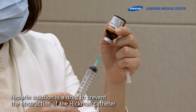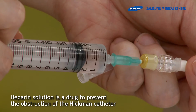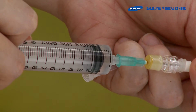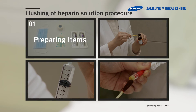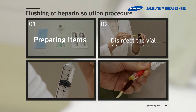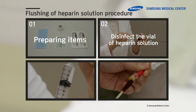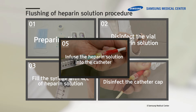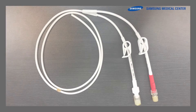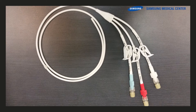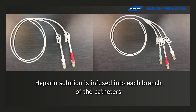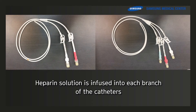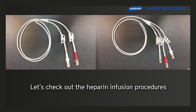Heparin solution is a drug used to prevent obstruction of the Hickman catheter. It should be infused every seven days. The Hickman catheter has two or three branches, and heparin solution is infused into each branch. Let's check out the heparin infusion procedures.